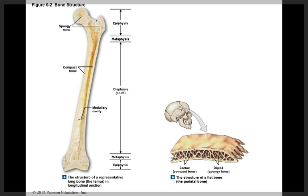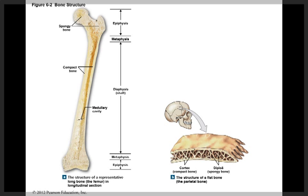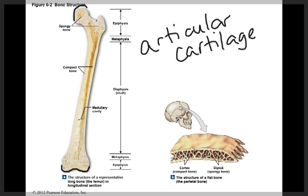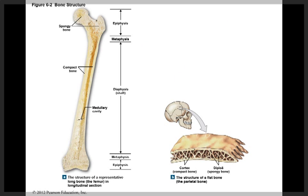In the center of the bone, we have a cavity called the medullary cavity — it's the central space in the diaphysis. On either end of the bone, where the bone will articulate with another bone, we have the articular cartilage, which is made up of hyaline cartilage and covers the epiphyses.